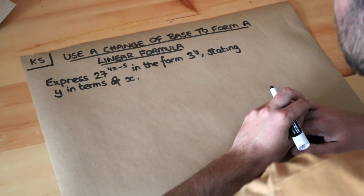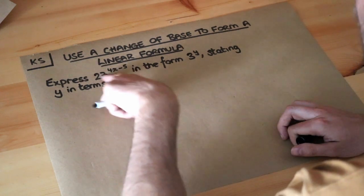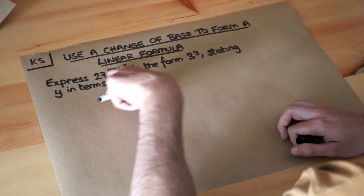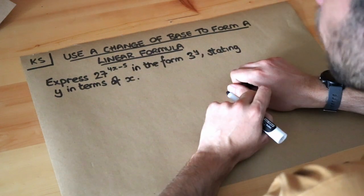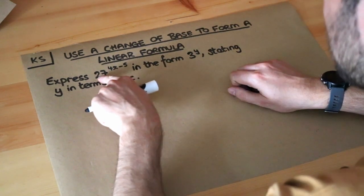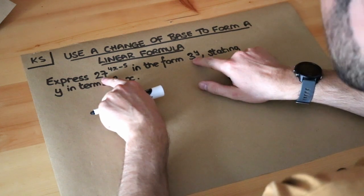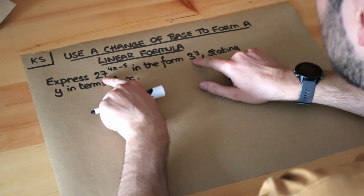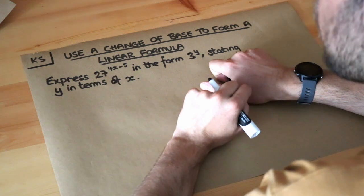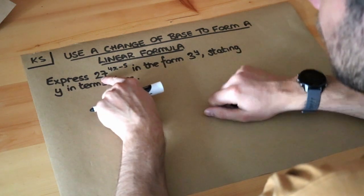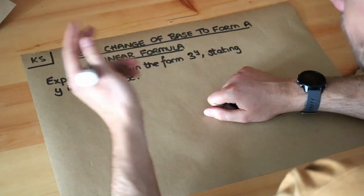Now whenever you have a question like this where you're asked to express a power expression in terms of another one, you should always spot the relationship between the bases. By the bases I mean the 27 and the 3. Notice that 27 and 3 are both powers of 3. 27 is 3 cubed and 3 is just 3 to the 1.